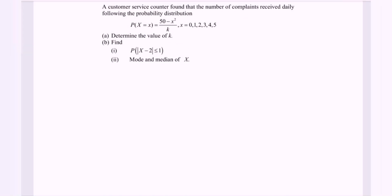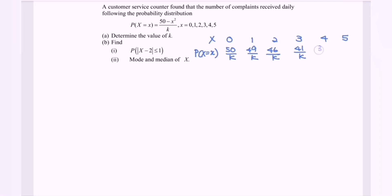Hello everyone. In this video, I'm going to discuss the example for random variable. A customer service counter found that the numbers of complaints received daily follow a probability distribution. We have x (the random variable) equal to 0, 1, 2, 3, 4, and 5, with probability function (50 minus x²)/K. Substituting values gives: 50/K, 49/K, 46/K, 41/K, 34/K, and 25/K.